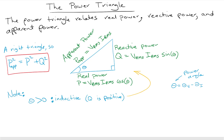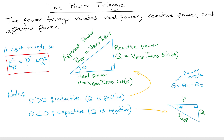When theta is positive, as shown in the triangle, the circuit is inductive and Q has a positive value — reactive power Q would be positive in an inductive circuit. However, if theta is negative, as shown in the drawing on the right, this indicates a capacitive load and Q is negative.